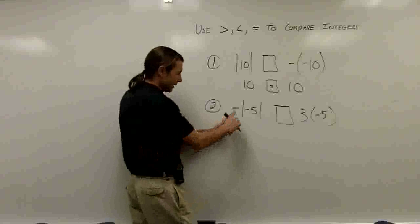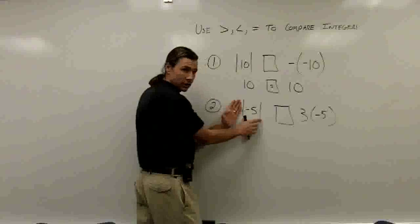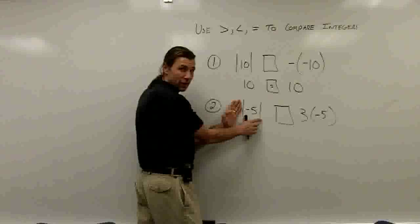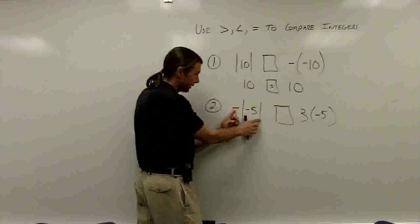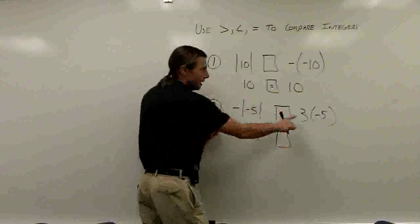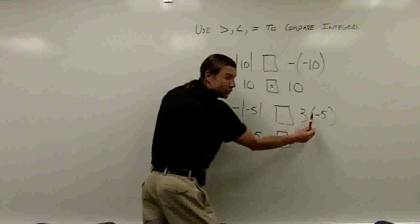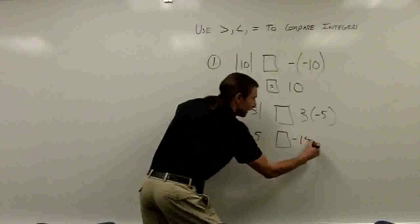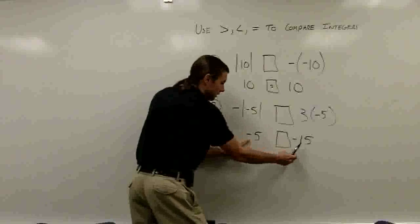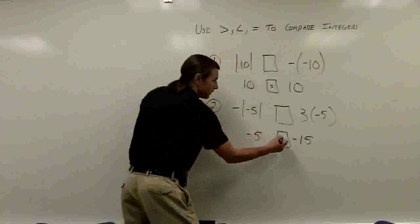In the second problem, I have the opposite of the absolute value of negative 5. First, the absolute value of negative 5 is positive 5. Then I take the opposite of that, which is negative 5. On the other side, I'm multiplying positive 3 times negative 5 — different signs — giving me negative 15. Comparing negative 5 to negative 15, negative 5 is larger, so I use the greater than symbol.